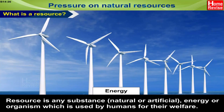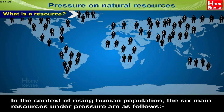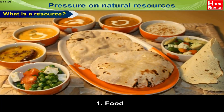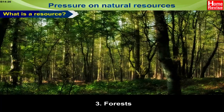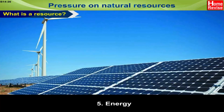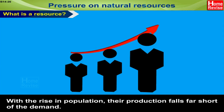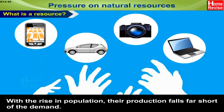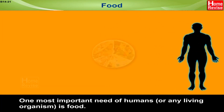Pressure on natural resources: A resource is any substance — natural or artificial — energy or organism which is used by humans for their welfare. In the context of rising human population, the 6 main resources under pressure are: 1. Food, 2. Land, 3. Forest, 4. Water, 5. Energy, 6. Minerals. With the rise in population, their production falls far short of demand.